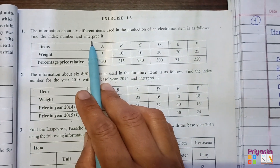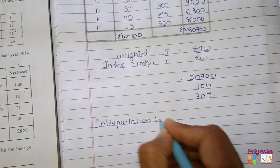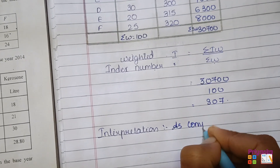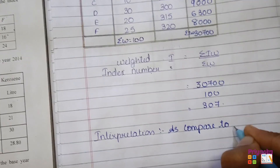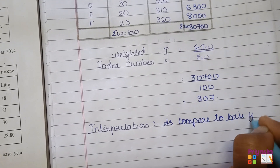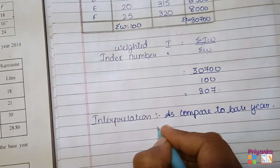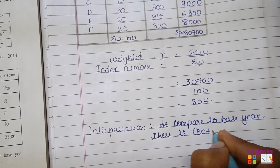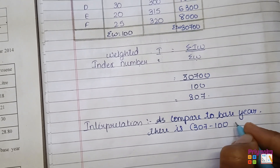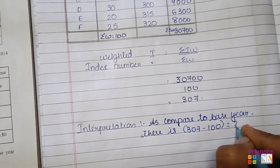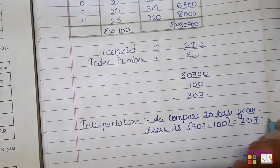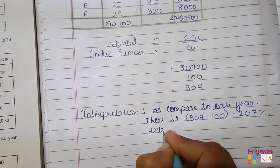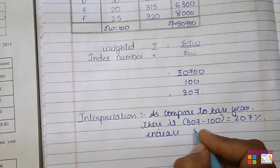Putting the values into the formula: 30700 divided by 100 gives us 307. For the interpretation: as compared to the base year, we found 307, and 307 minus 100 gives 207, meaning there is a 207% increase in the current year.